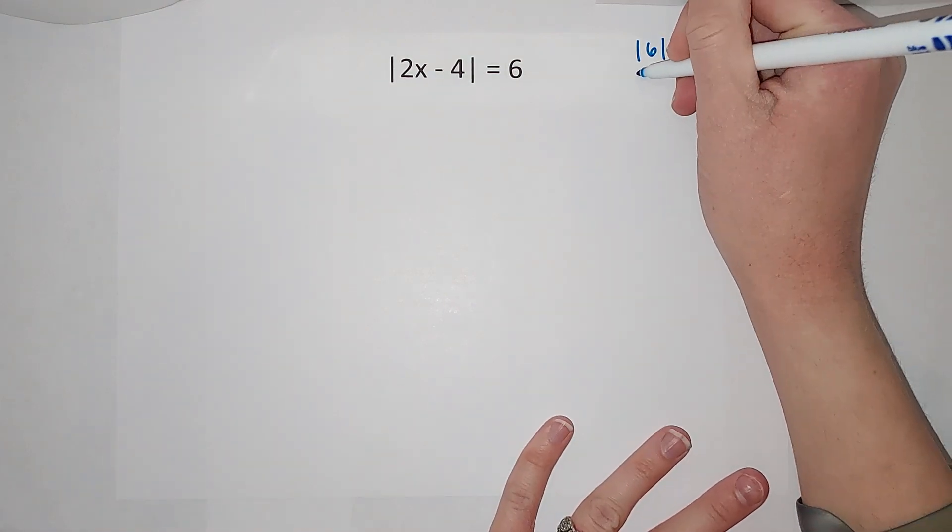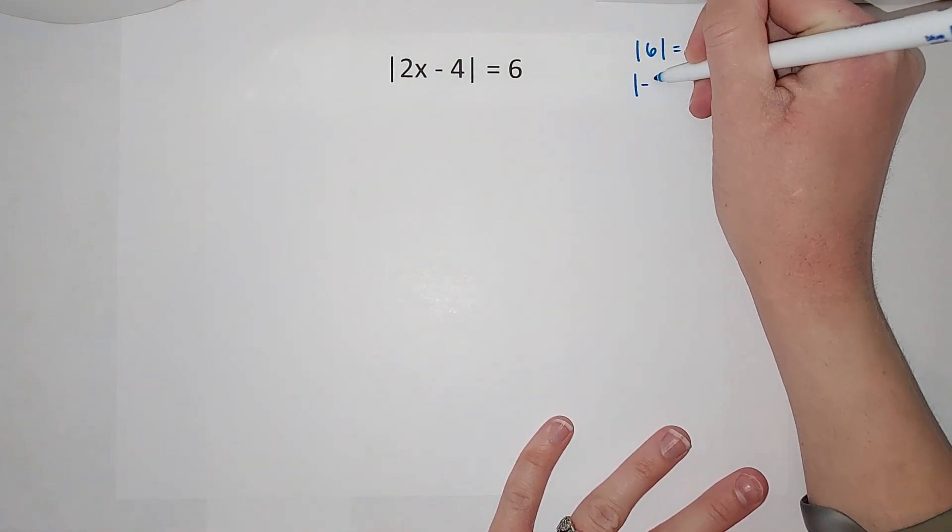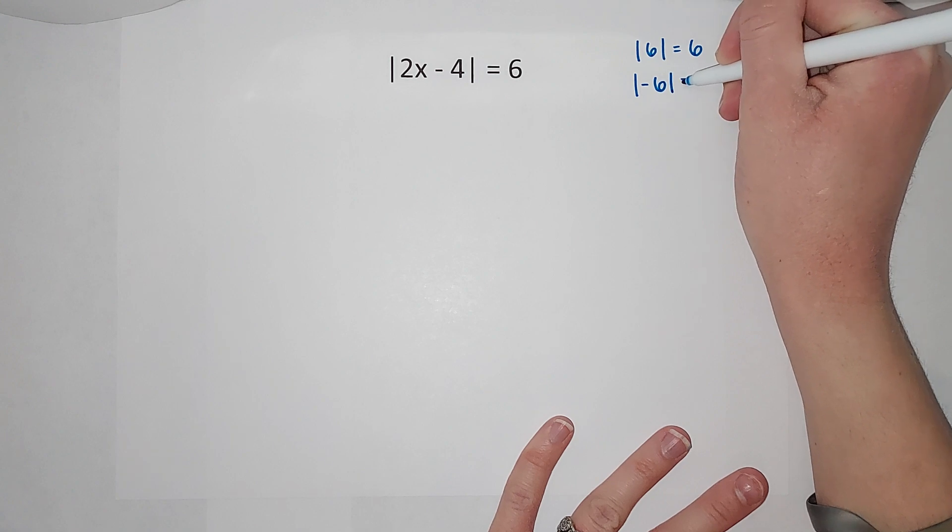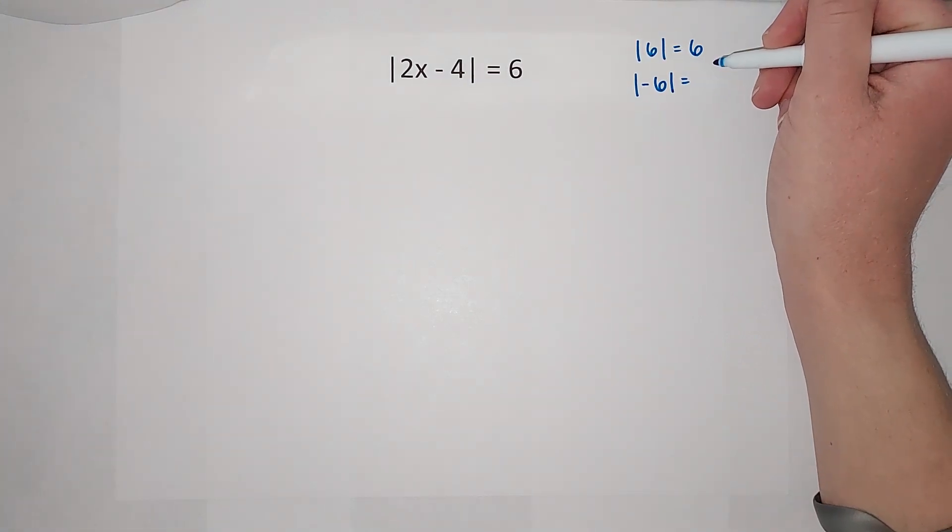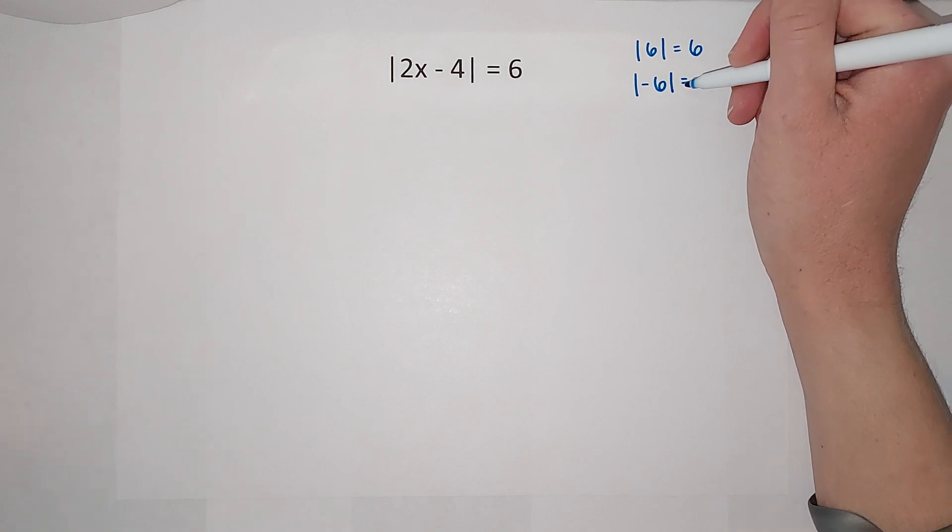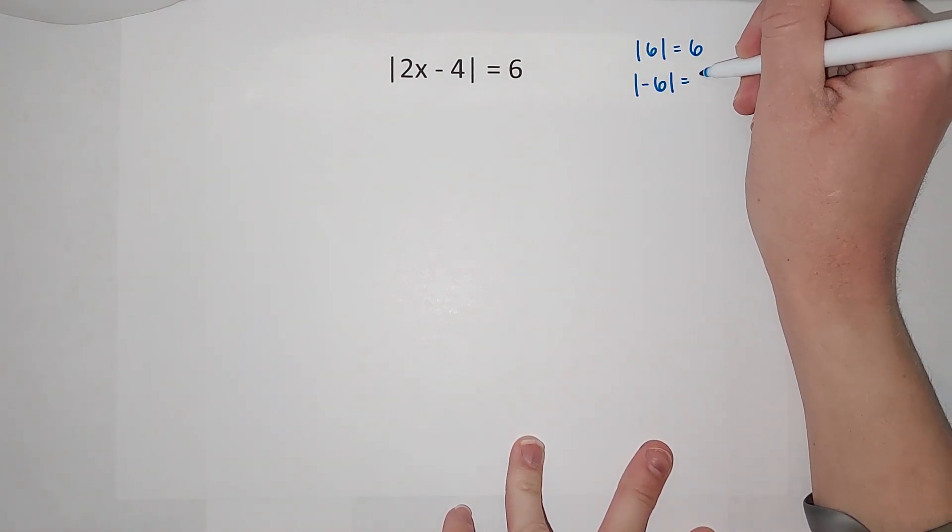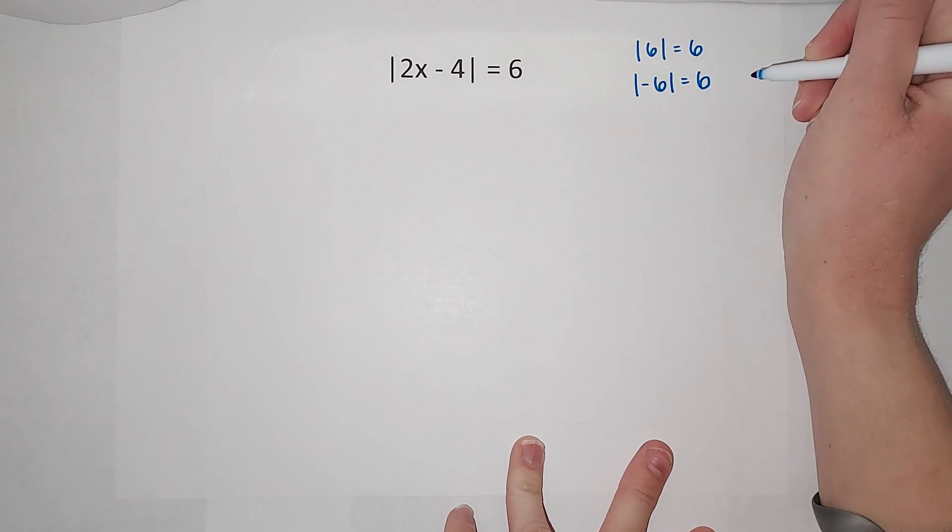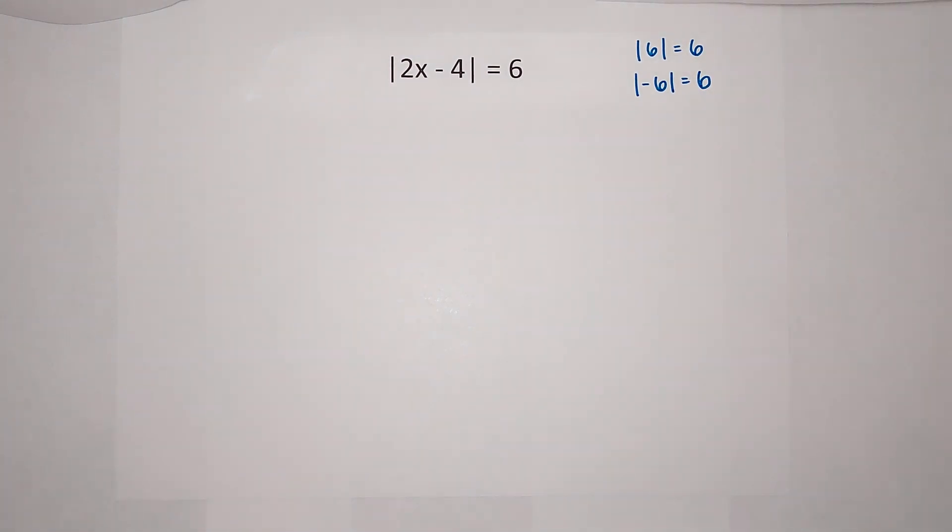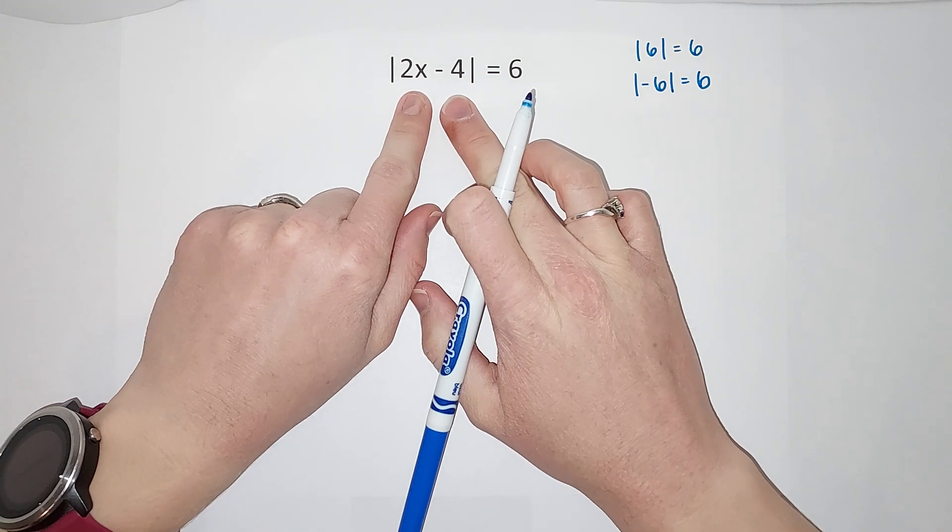Now if I have the absolute value of negative six - you can't have a negative distance, right? You can't travel negative two miles. So the distance of negative six from zero is also six.